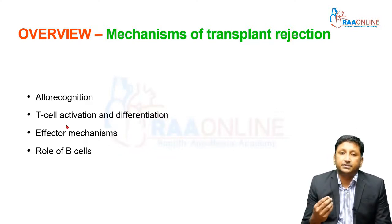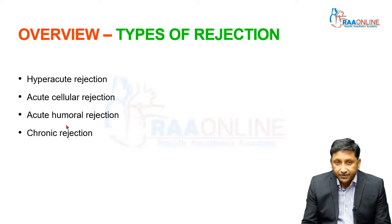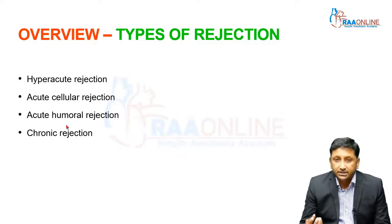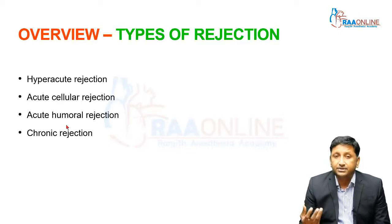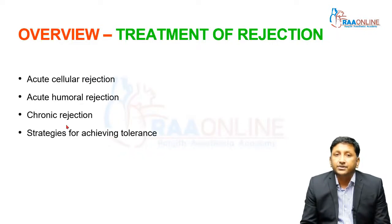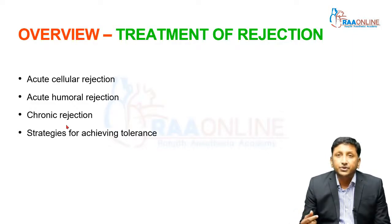The types of rejection we need to know: hyperacute rejection happens immediately after transplant and is more common in kidney transplants — in liver transplants, we have never seen hyperacute rejection. Second is acute cellular rejection, which happens within a few months of transplant. Acute humoral or antibody-mediated rejection happens majorly in kidney transplants but is also seen in liver. Chronic rejection happens in any transplant. Prevention involves desensitization protocols, induction therapy, and maintenance immunosuppression. Treatment differs for acute cellular, acute humoral, and chronic rejection.